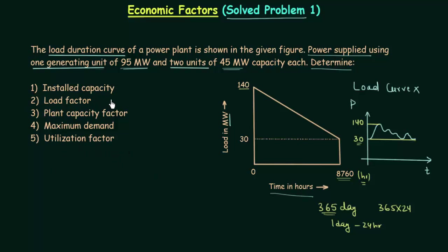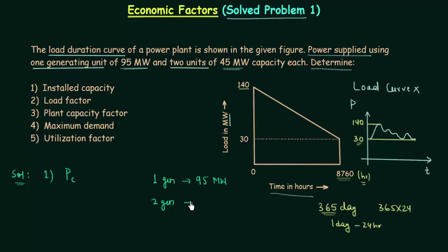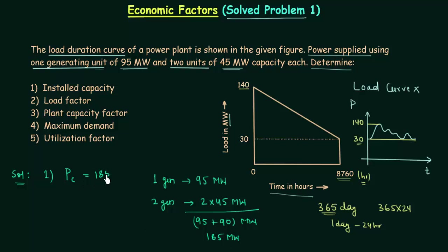Let's begin with the first part: installed capacity. The installed capacity is the plant capacity PC. The power plant has one generating unit of 95 megawatt and two generating units of 45 megawatt each. Combined, the two units provide 2 × 45 = 90 megawatt. So the total installed capacity is 95 + 90 = 185 megawatt.